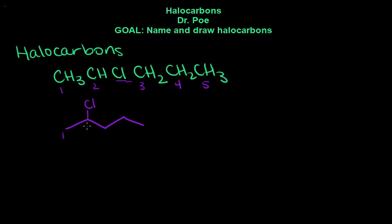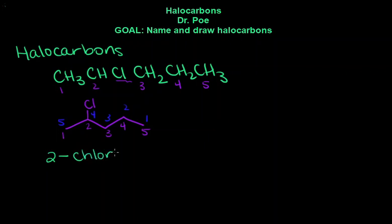In numbering, we keep 1, 2, 3, 4, 5 from this end. If we number it the other way — 1, 2, 3, 4, 5 — we see that 2 is smaller than 4. We always start with the lowest number on the longest chain, so this would be 2. Then you name the halogen ending in '-o': in this example, chloro. Or like bromo or fluoro, etc., depending on which specific atom it is.